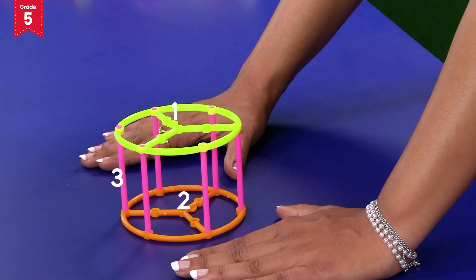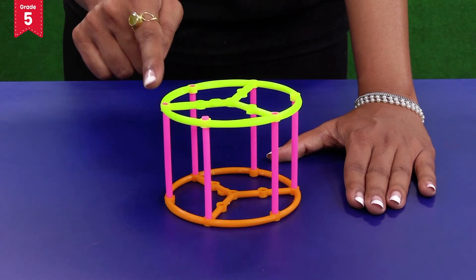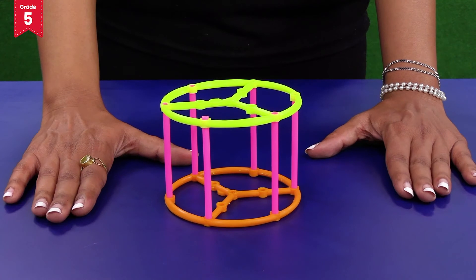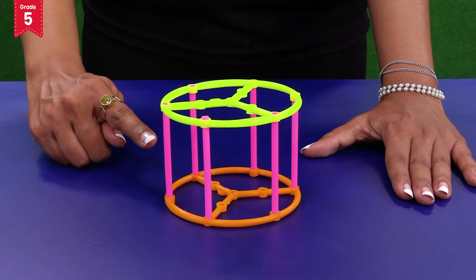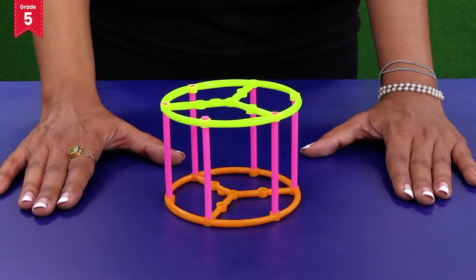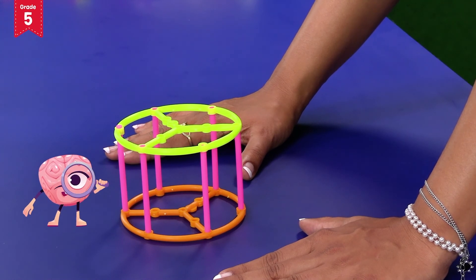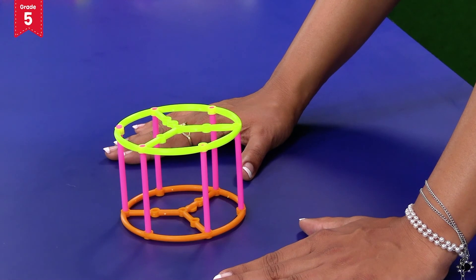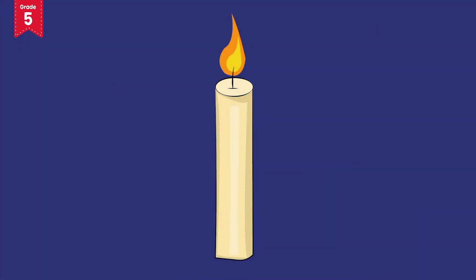The top flat circular face is joined with the curved face along a circular line. Similarly, the bottom flat circular face is joined with the curved face along another circular line — these are called the edges of the cylinder. There are two edges in a cylinder. As we can see, there are no corners, therefore a cylinder has zero vertices.